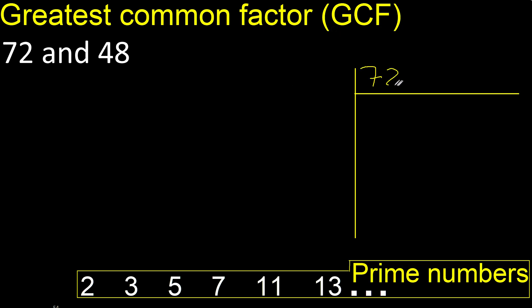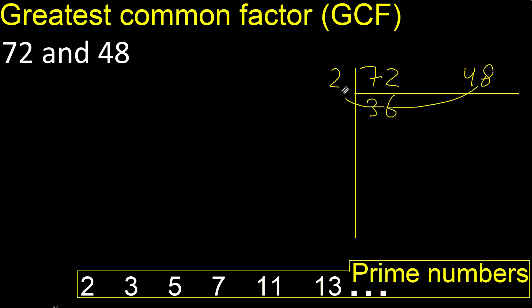Can 72 and 48 be divided by 2? Yes, therefore divide. Divided by 2: 36. Divided by 2: 24.